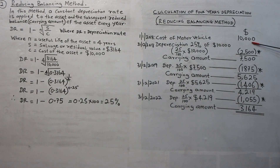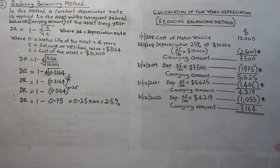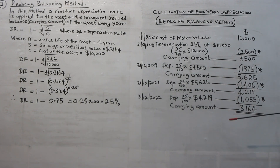Recall that under the straight line method, annual depreciation equals (cost minus scrap value) divided by useful life. The same amount is charged every year — hence it is called the fixed installment method, straight line method, or uniform rate method. We can now understand the difference between the straight line method and the reducing balance method.